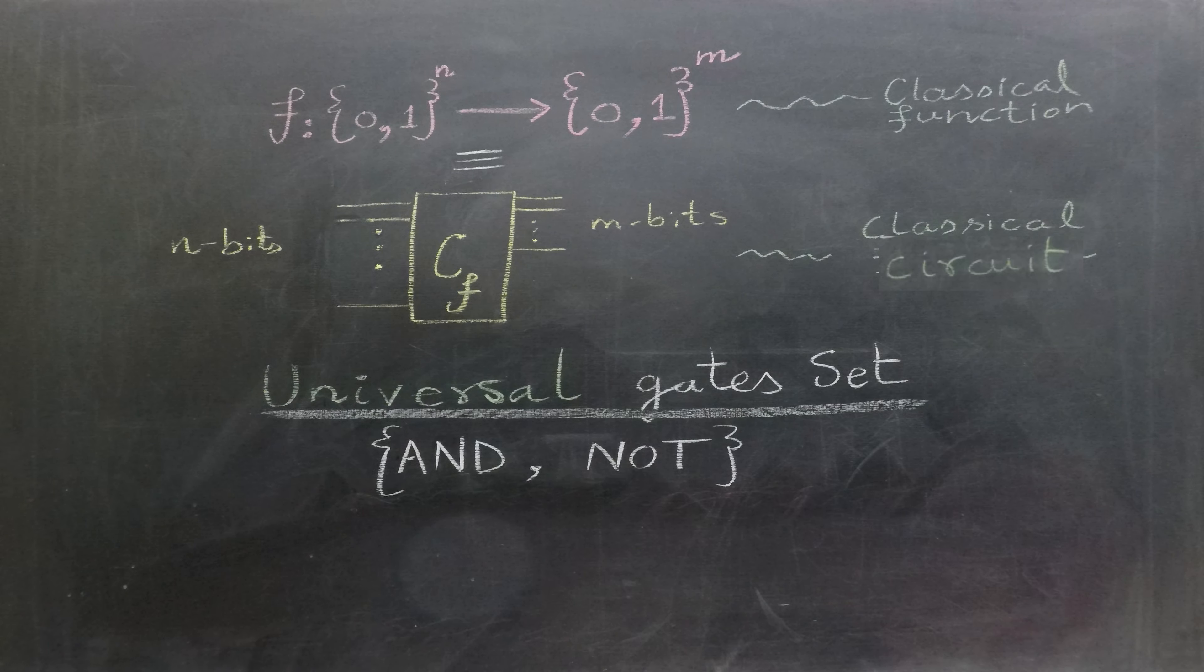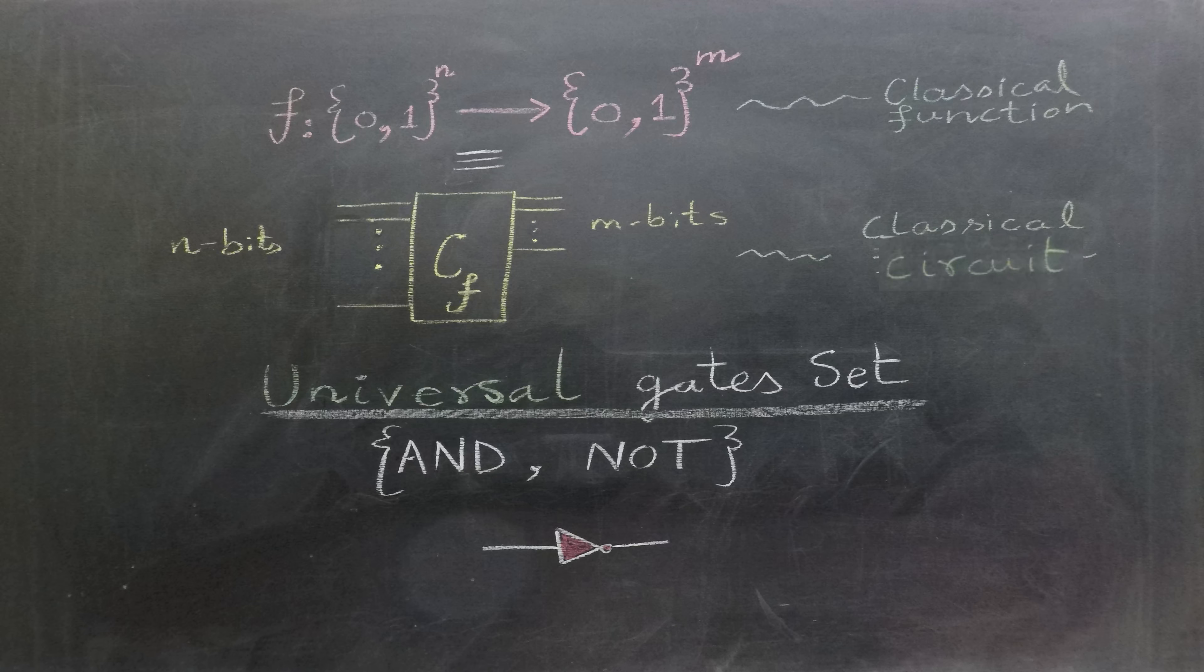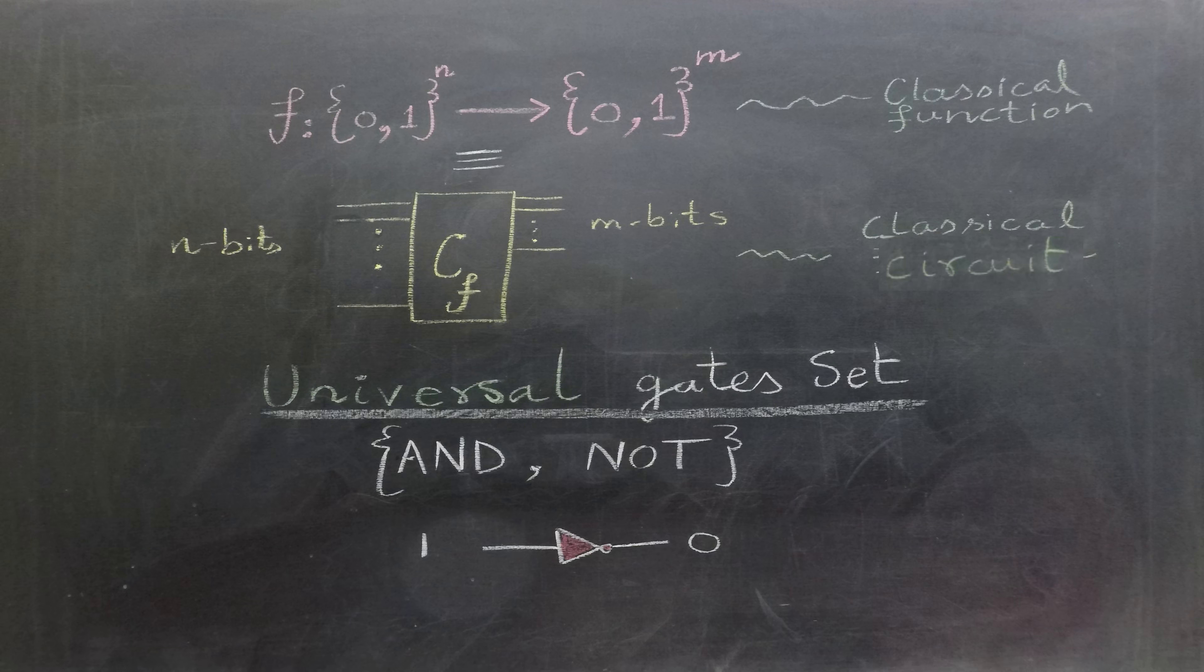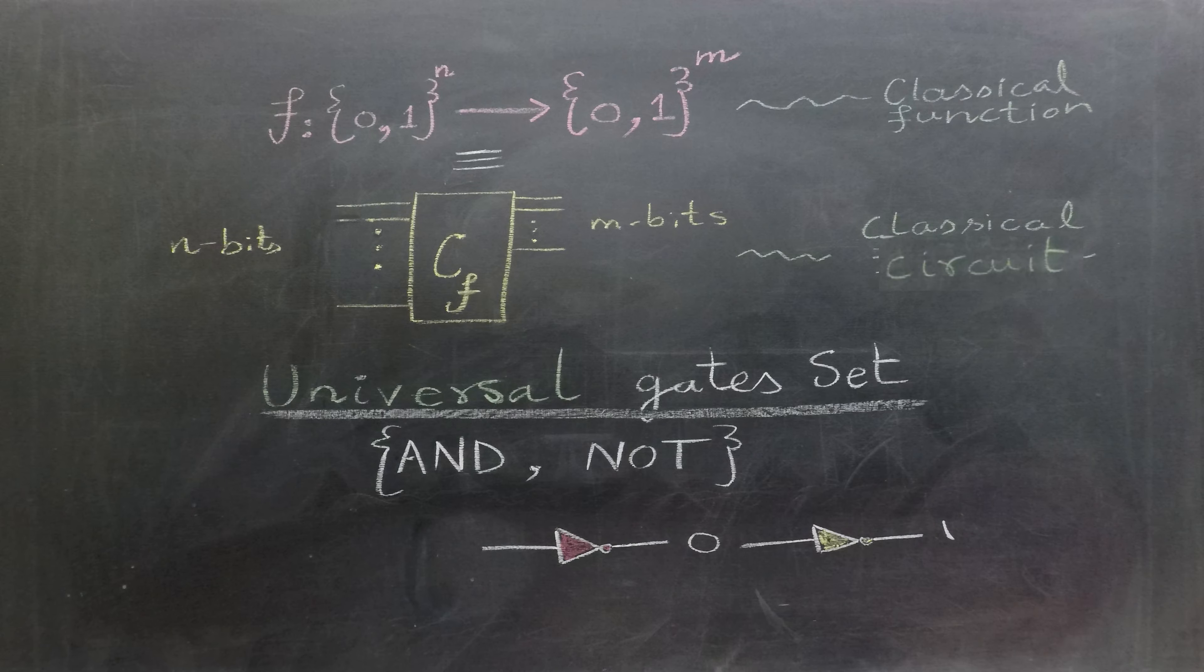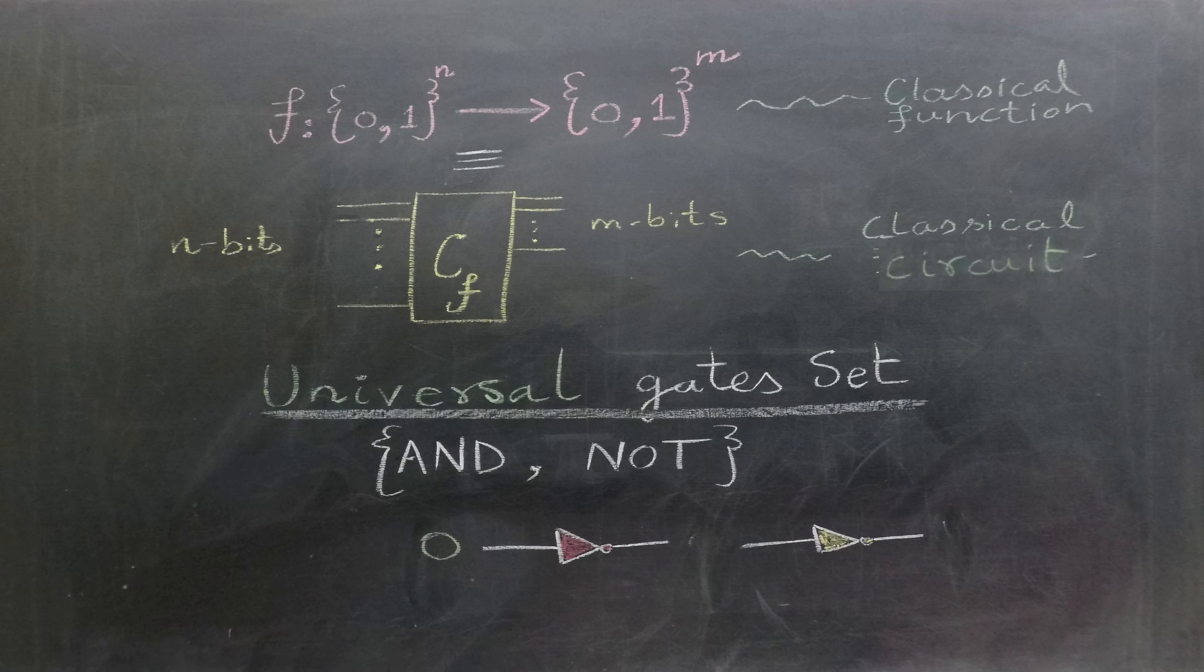Note that the classical NOT gate already possesses the property of reversibility. For instance, consider the operation of NOT gate. When we input a 1, it produces a 0. And if we input this 0 through the NOT gate once again, it returns us the original input of 1. Similarly, if we initially input a 0 to the NOT gate, we can reproduce this input by applying another NOT gate in sequence.